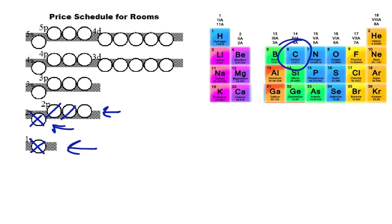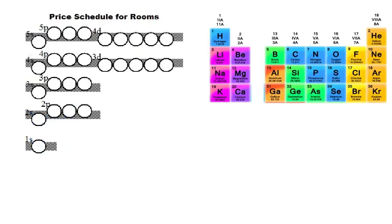That's called Hund's Rule. The idea is: if you have three rooms of the same price, put one electron in each before doubling them up. When you have five rooms of the same price, same thing — one in each before doubling up. So for carbon with six electrons: one, two into 1s; three, four into 2s; then five and six go into separate 2p rooms.